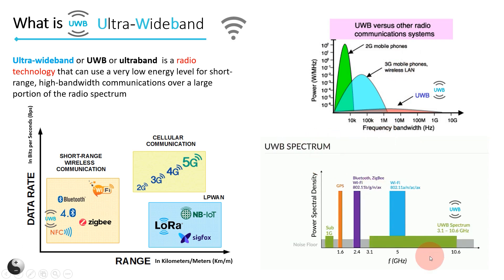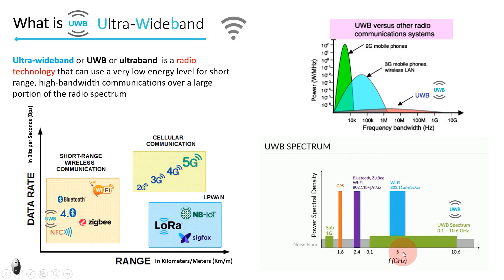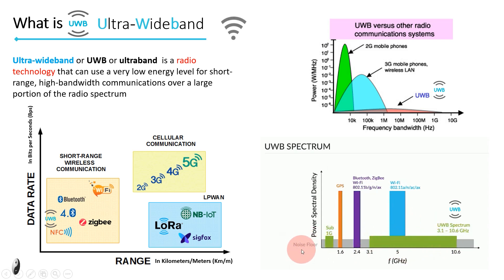The spectrum of ultra-wideband shows UWB ranges from 3.1 GHz to 10.6 GHz. Whereas the standard 2.4 GHz band is assigned for Bluetooth, Wi-Fi, and ZigBee. On the other hand, Wi-Fi 5 has a 5 GHz band, and GPS comes with 1.6 GHz frequency. You can see the ultra-wideband signal has lower spectral density than other radios, but slightly higher than the noise floor. So there is no chance of interference with other technologies.